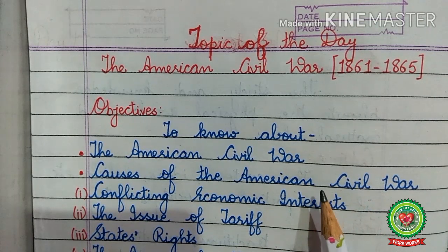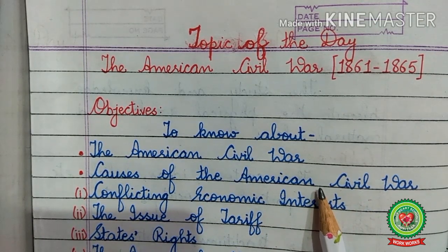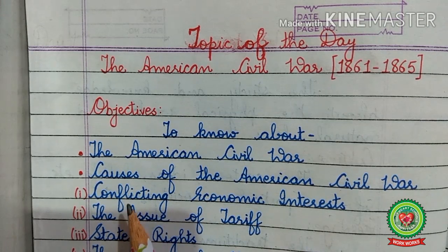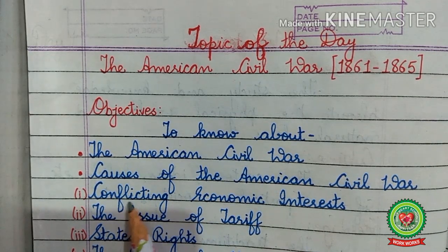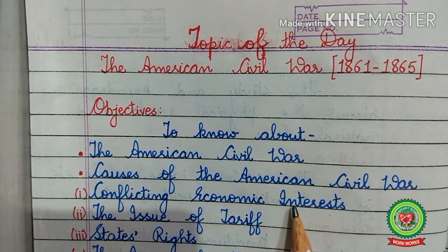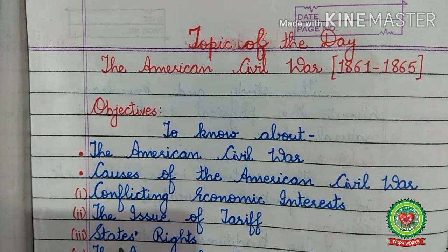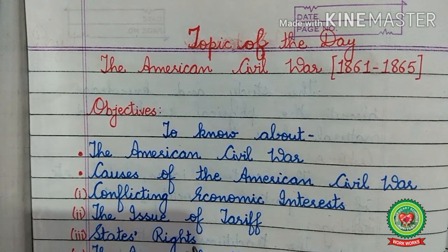There are many causes of the American Civil War, but today we will discuss the first three causes. It includes conflicting economic interests, the issue of tariff, and states' rights.